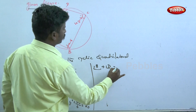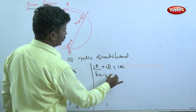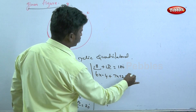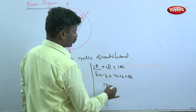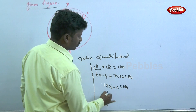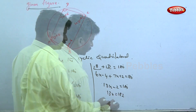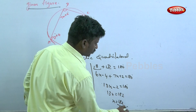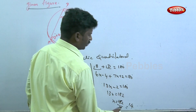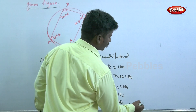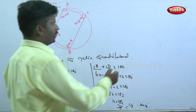For the other pair of opposite angles: angle B plus angle D equals 180 degrees. So (6x minus 4) plus (7x plus 2) equals 180 degrees. Combining: 13x minus 2 equals 180, giving 13x equals 182. Therefore x equals 182 divided by 13, so x equals 14 degrees.